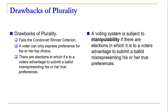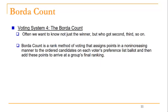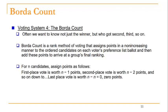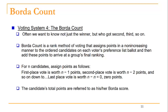That's the plurality method, and the big takeaway is only the first place votes count. Our second method is the Borda count. Often we want to note not just the winner but who came in second, third, and so on. A Borda count is a rank method of voting that assigns points in a non-increasing manner to the ordered candidates on each voter's preference list ballot, and then adds these points to arrive at a group's final ranking. If there are n candidates, a first place vote is worth n−1 points, a second place vote n−2 points, and so on down to last place which is worth no points. A candidate's total points are referred to as his or her Borda score.